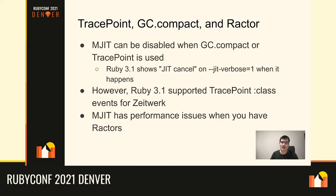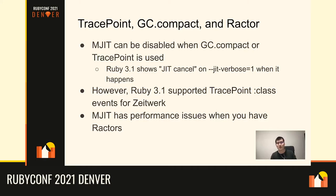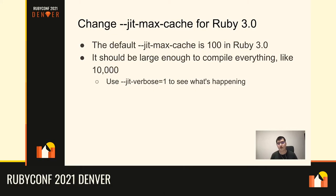MJIT also has performance issues with Ractors — we're still investigating. When you enable Ractors, the Ruby interpreter switches to multi-Ractor mode, which is somewhat slower even without JIT. On top of that, the code generated by MJIT becomes significantly slower when Ractors are enabled. We're working on this issue, but for now you may not see peak JIT performance when using Ractors.